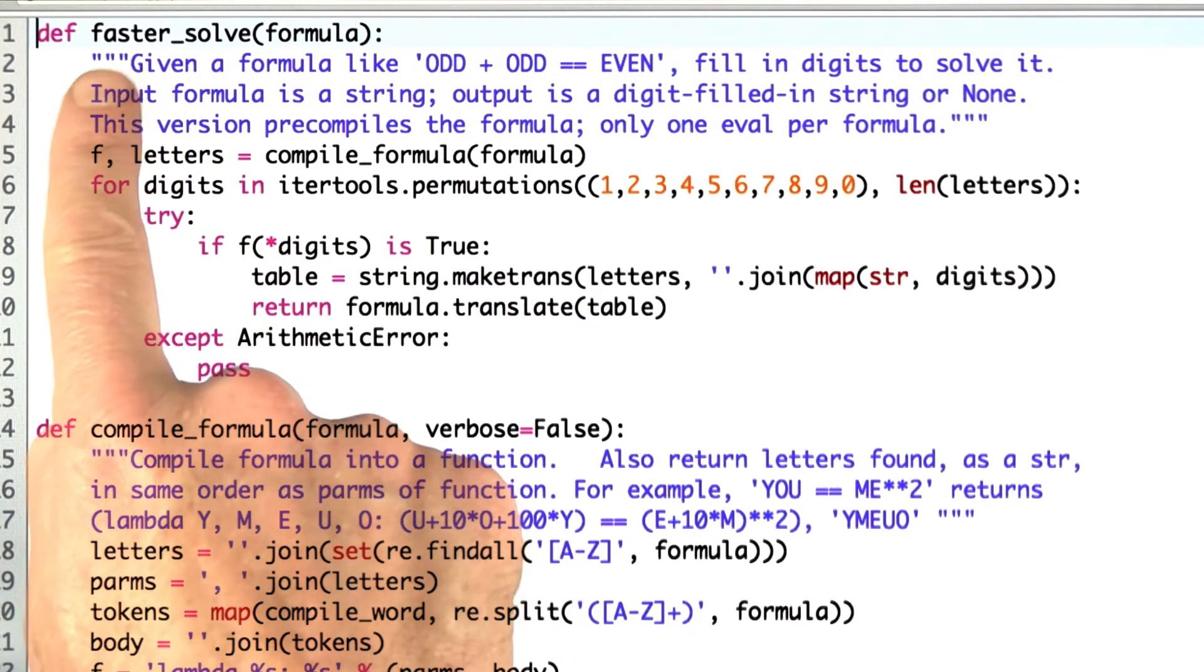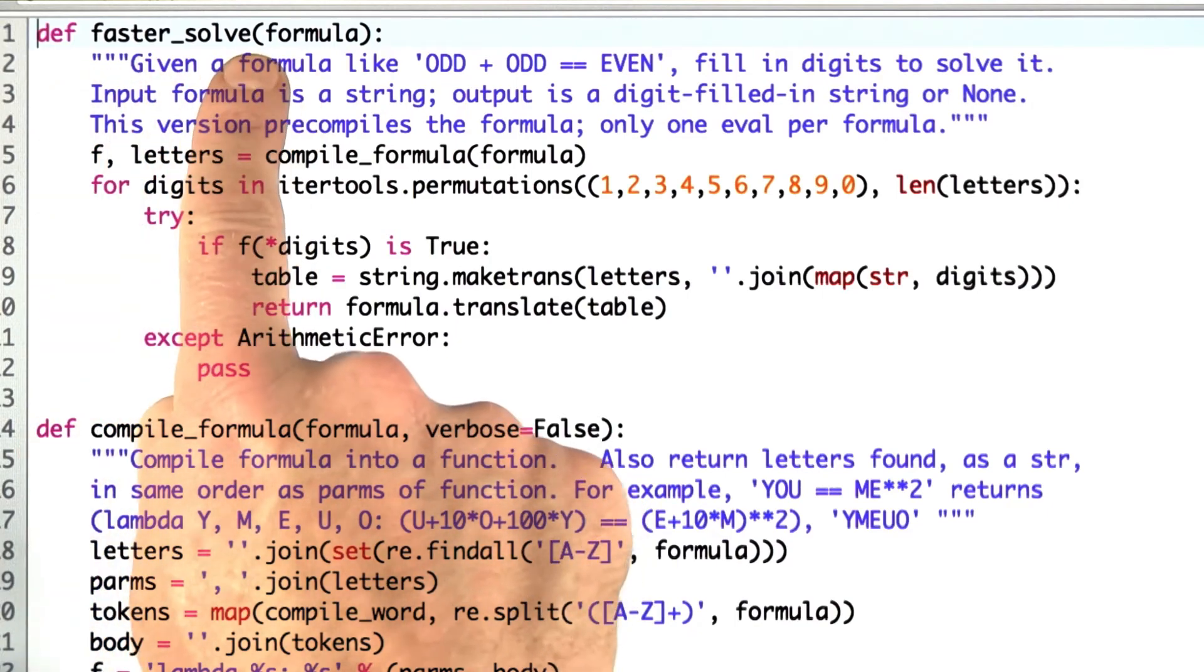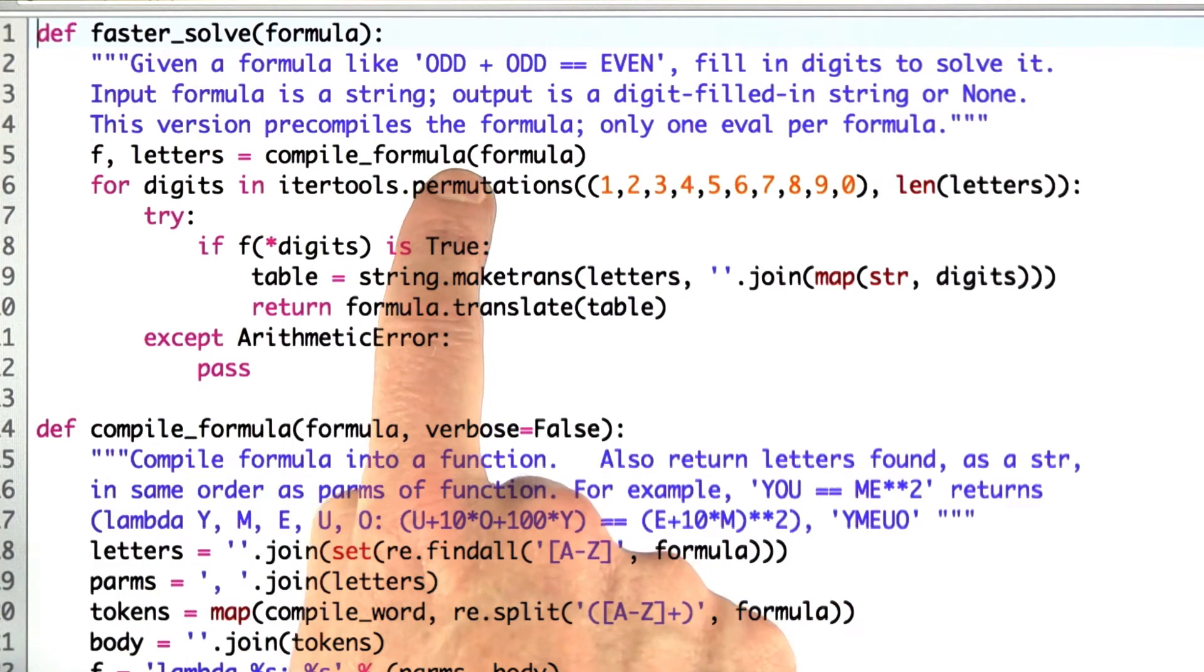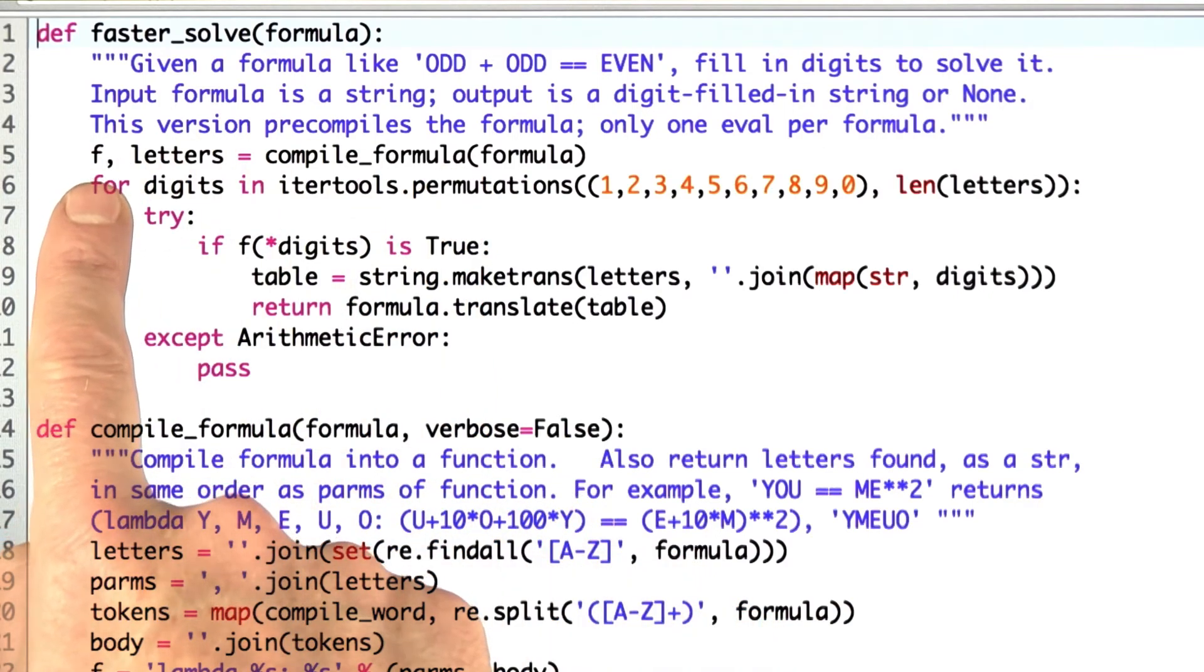Now I explained the whole program. I'm calling it FasterSolve. I take a formula. The first thing I do is compile the formula. That gives me back the function that represents it.